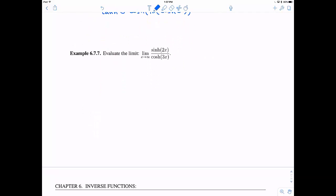Alright. Now let's try one here, a nice limit problem here. So let's rewrite this, hyperbolic sine and hyperbolic cosine. So hyperbolic sine, I know this is e to the 2x minus e to the negative 2x all over 2.